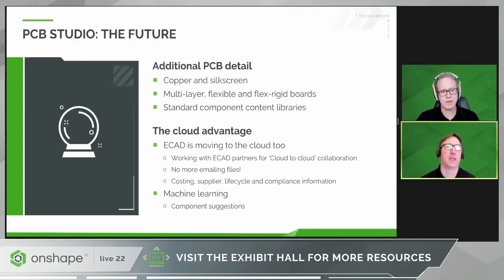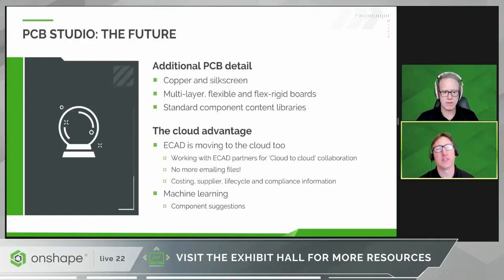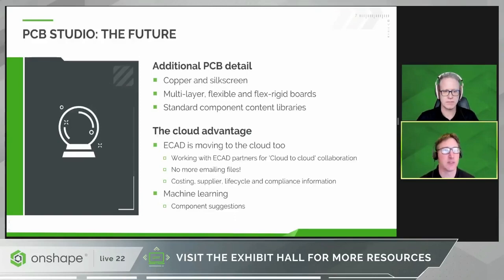Finally, another really interesting area that we're beginning to investigate is machine learning, which is another advantage of being on the cloud. As you saw in Greg's demo, users can select a detailed Onshape model to represent a certain ECAD footprint. But how do you know which model to use, especially if you're a mechanical engineer without a great knowledge of components? By analyzing and learning from the choices made by others, we're hoping to offer recommendations of which component you should maybe use based on decisions that other users have made. Now I'll hand you back to Greg, who's going to talk about the exciting new Frames functionality in Onshape.